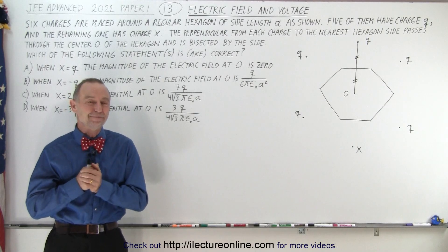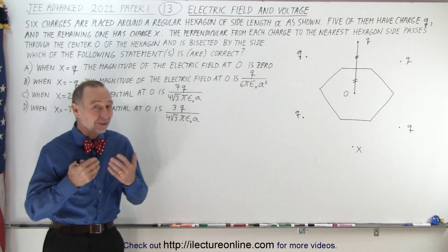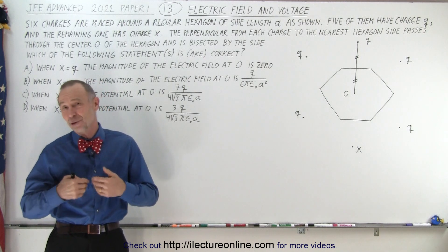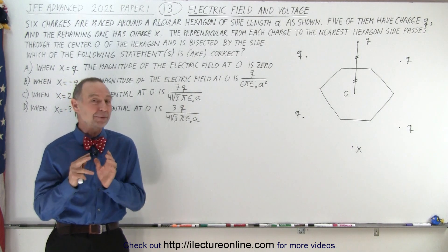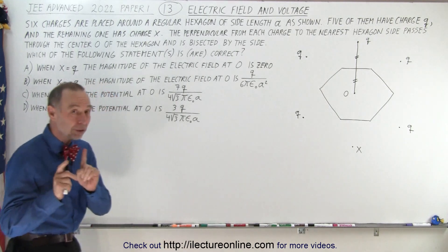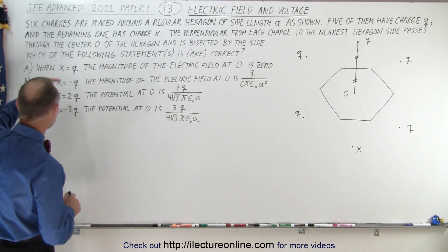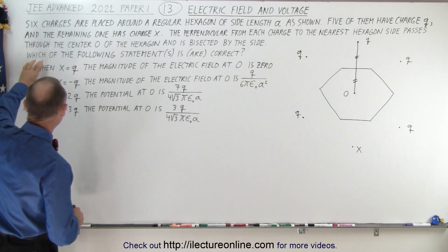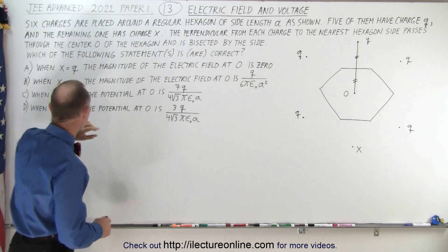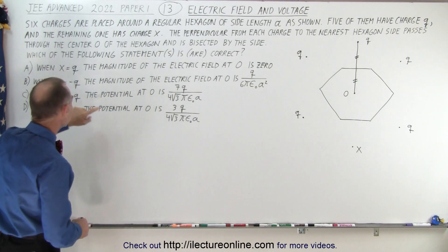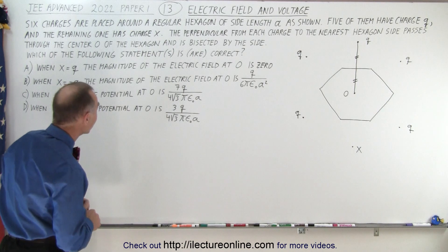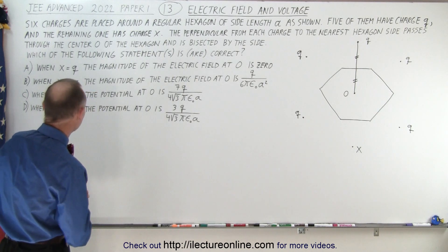Welcome to ElectronLine. On this next problem from the JEE Advanced Test, it actually is a doable problem, and you might be able to do this one in three minutes. Now, there's one word of caution: notice that if you read the four statements, the first two statements deal with the electric field, and the last two statements deal with the potential. So make sure you realize that when you read it. You do have to pay attention to the way the questions are asked.